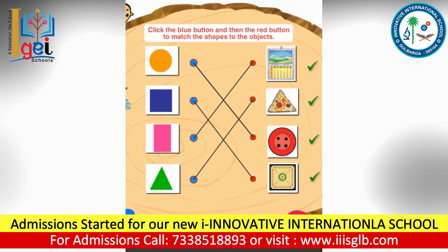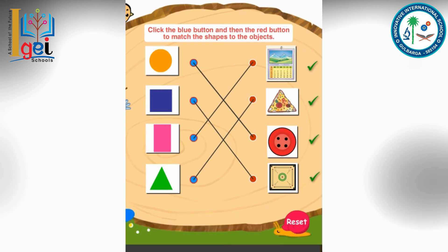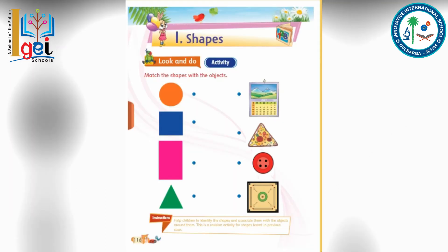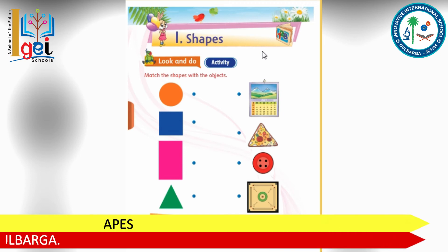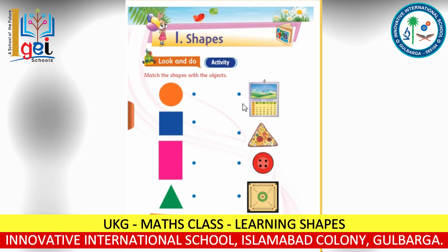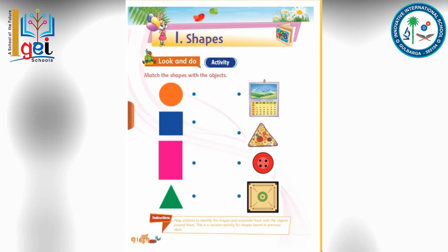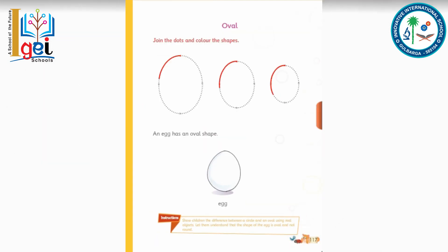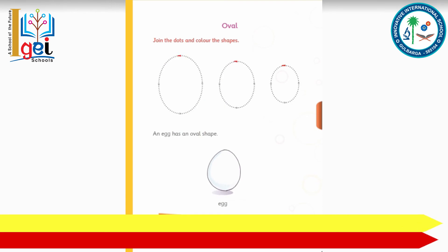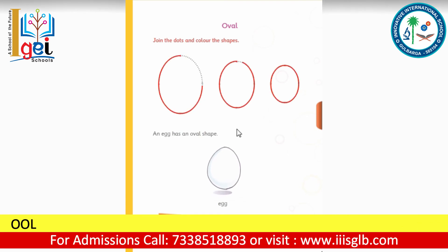So everyone — has everyone understood this? By seeing this activity, you have to match all the following shapes with these shapes. Okay, next, let's go to the next page.